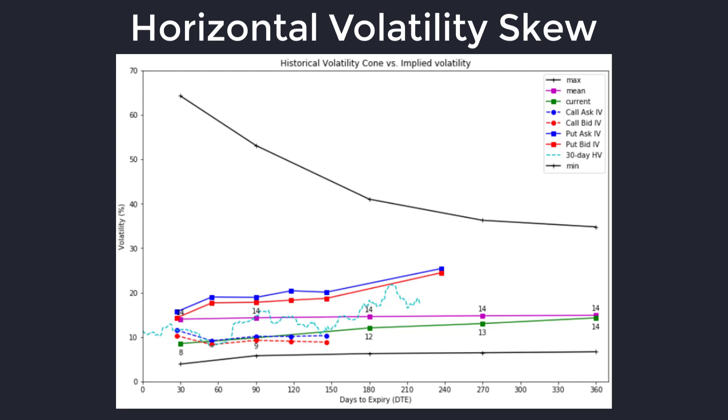In contrast to that, what is vertical skew? Vertical skew is when you consider options in the marketplace at the same time horizon but across different strikes. So we're looking at out-of-the-money options, in-the-money options, and at-the-money options. By looking at this skew, we can get a good gauge of where supply and demand in the marketplace is.